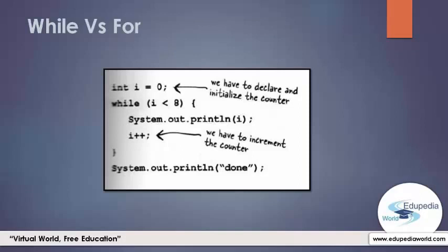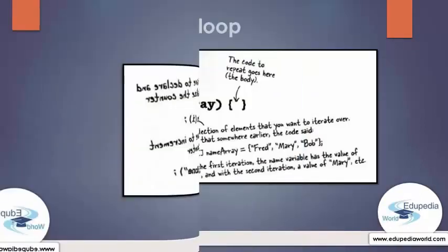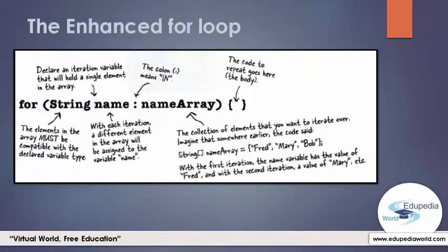For example, looping through an array — you know the length of the array, so you know how many times it should iterate. Therefore, the for loop is ideal for that situation. Now let's talk about the enhanced for loop.